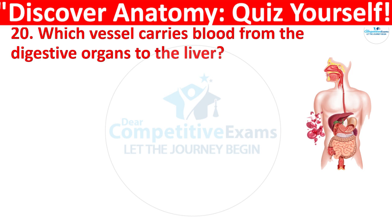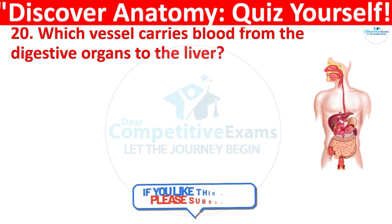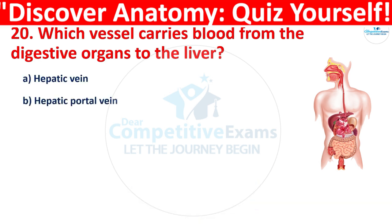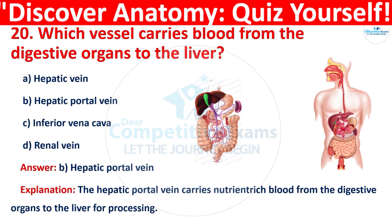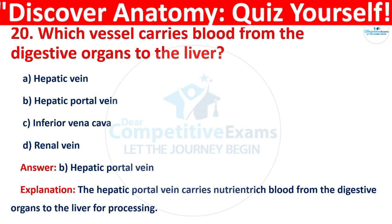Question 20: Which vessel carries blood from the digestive organs to the liver? Your options are: Hepatic vein, Hepatic portal vein, Inferior vena cava, or Renal vein. The correct answer is B, that is the Hepatic portal vein. The hepatic portal vein carries nutrient-rich blood from the digestive organs to the liver for processing.